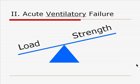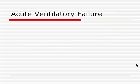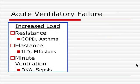Compared to acute hypoxemic respiratory failure, acute ventilatory failure represents an imbalance between the load placed on the respiratory system and the patient's strength. Loads can come from increased airway resistance, such as might be seen in COPD or asthma. Load can result from an increased respiratory system elastance, as might be seen in patients with parenchymal interstitial lung disease, as well as effusions or chest wall disorders. And load can result from an underlying metabolic acidosis, such as is seen in diabetic ketoacidosis or sepsis.